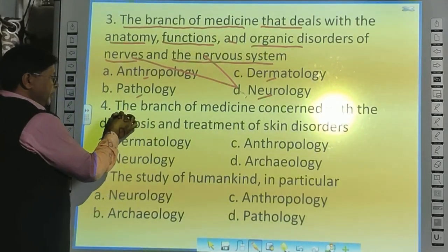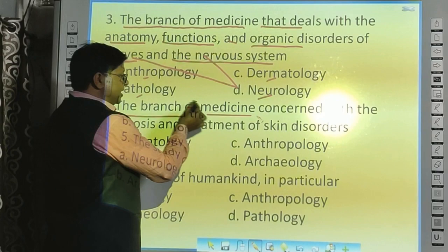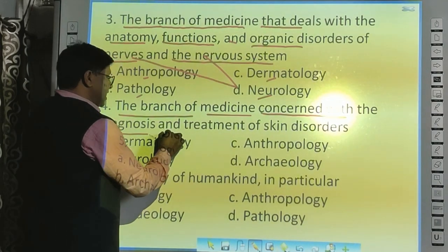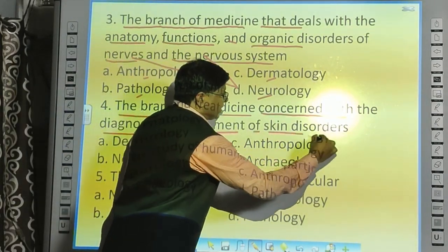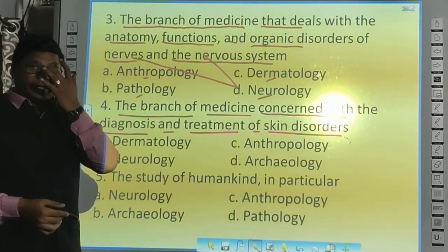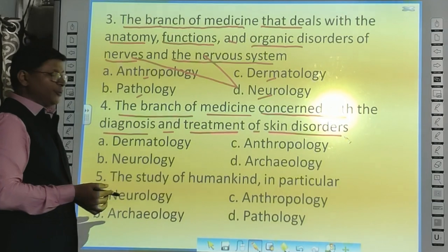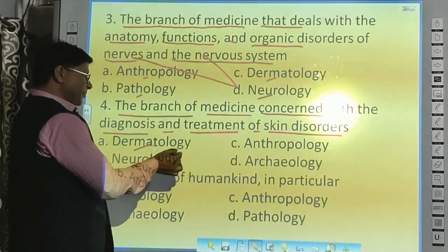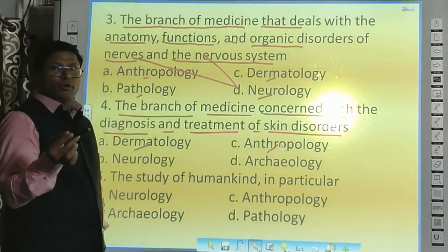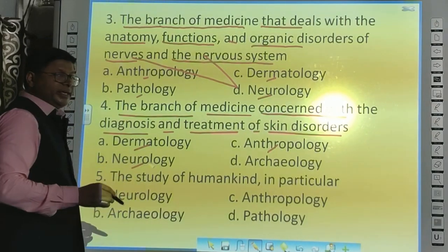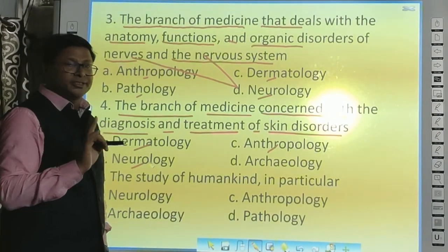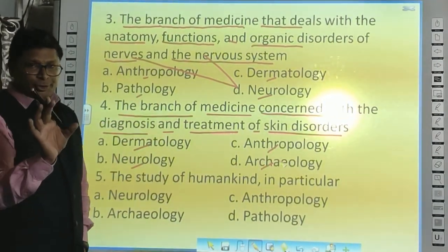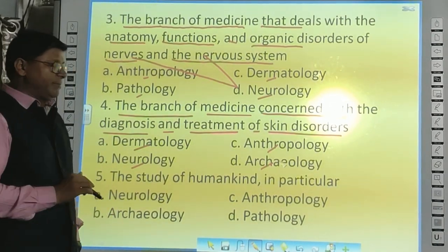Next question: the branch of medicine that deals with the diagnosis and treatment of skin disorders. As soon as you see 'skin disorders,' you know the answer — Dermatology. 'Derm' means skin. Not Anthropology — that is Manav Vikas Vigyan. Not Neurology — that is Ashnayoo Tantrika Tantra Vigyan. And not Archaeology — that is the study of history and prehistory through excavation of sites.